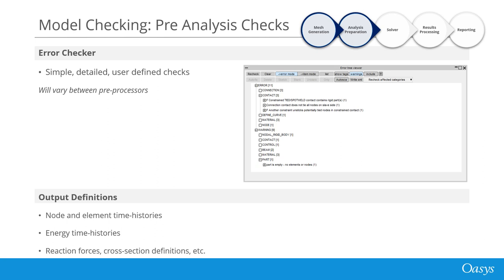As part of your pre-analysis checks, you'll likely run an error checker in your pre-processor. These can be simple, detailed, or user-defined checks specific to your establishment's in-house targets. The extent of errors and warnings reported varies between pre-processors, and with experience you'll learn which are more serious and need to be actioned. Also check output definitions: the correct database cards for node and element time histories, energy time histories, reaction forces, cross-section definitions, and contact surface output - do you have the correct star database keyword defined?